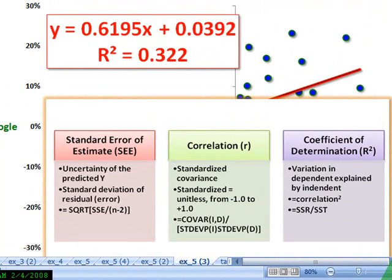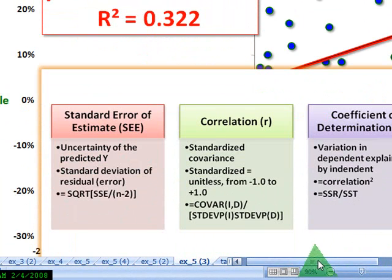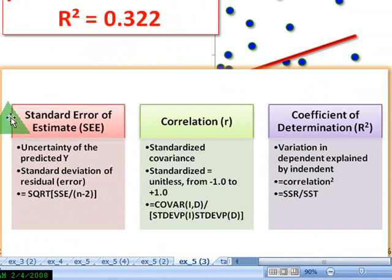And it's also, it's not called R squared by accident. It is the square of that correlation coefficient. So if we come back to a summary here, and I'll move this like this, then what we have are the standard error of the estimate. It refers to the uncertainty of the predicted y, it's the standard deviation of the residual or error term. And we know it's a function of this, the sum of squared errors.